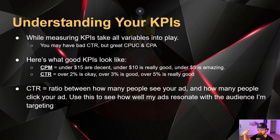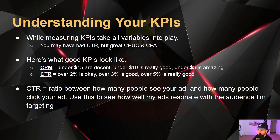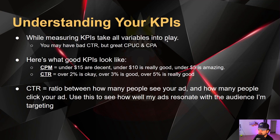While measuring your KPIs, you need to take all variables into play. You might have bad CTR — like 1% — but maybe your CPMs are really low, like a $5 CPM, and you're getting decent traffic with a great CPUC at 20 cents cost per unique link click, and your CPA is at $5. Meanwhile, if your profit margin is only $15, you still need to consider all of those variables together.